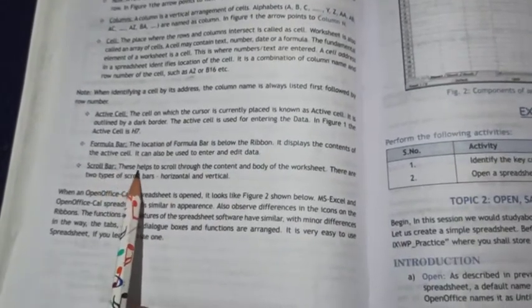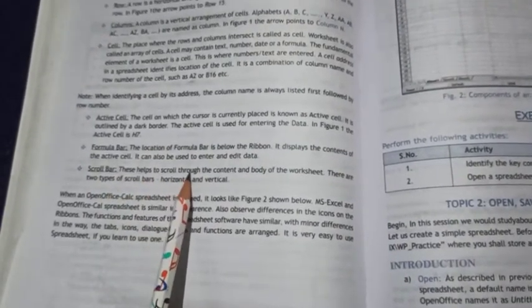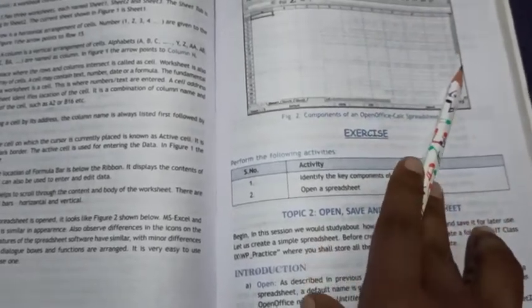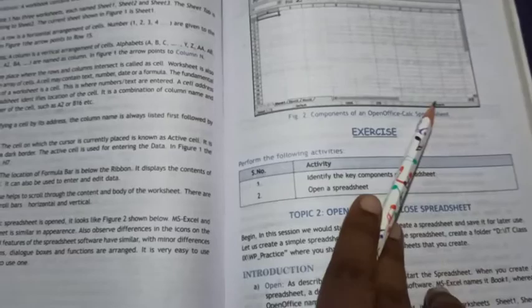Scroll Bars: These help to scroll through the content and body of the spreadsheet. There are two scroll bars: horizontal and vertical.